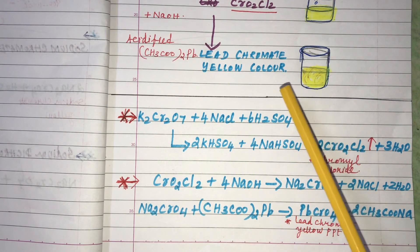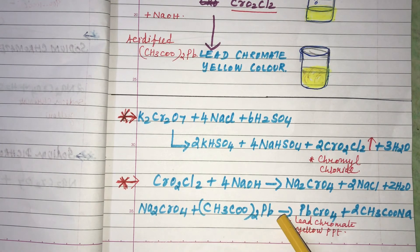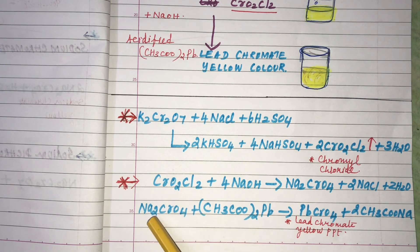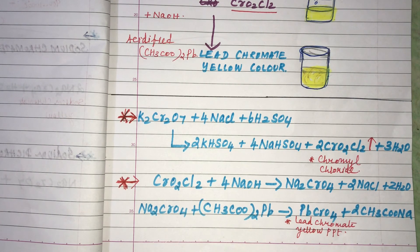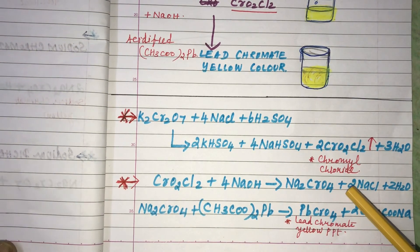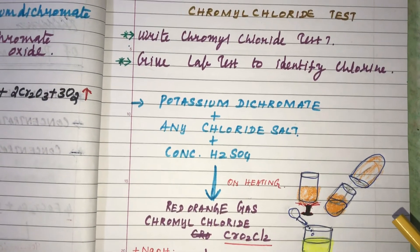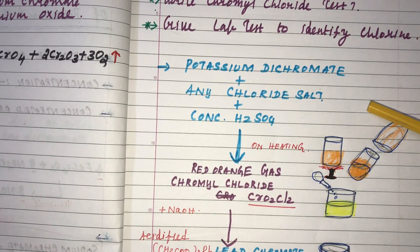To this, if you add the acidified Lead Acetate solution, a double decomposition reaction occurs: Acetate reacts with Sodium, and Chromate reacts with Lead. This combination of Lead and Chromate, and Sodium and Acetate, results in the formation of a yellow precipitate of Lead Chromate and Sodium Acetate. These are all the equations for the Chromyl Chloride Test — one of the lab tests to identify chlorine, using Potassium Dichromate.